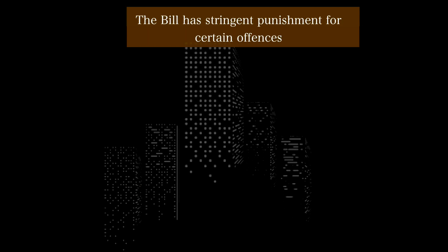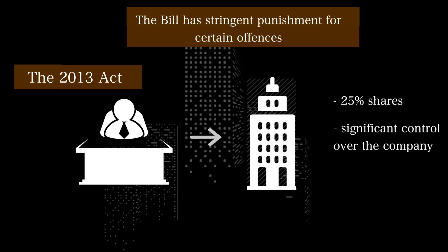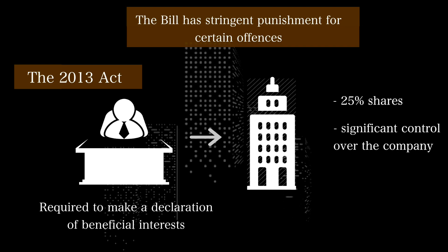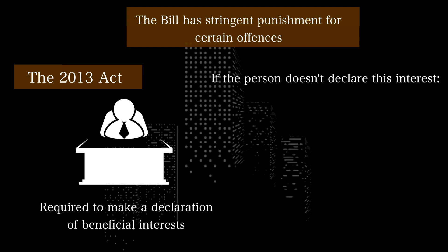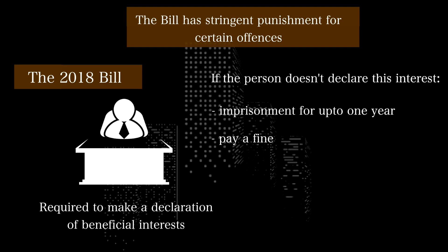The Bill also makes the punishment for certain offences more stringent. For instance, under the Act, if a person holds a beneficial interest of at least 25% shares in a company or has significant influence or control over the company, he is required to make a declaration of his beneficial interest. If a person does not declare this interest, he can be punished with a fine between 1 lakh rupees and 10 lakh rupees along with a continuing fine. The Bill now introduces imprisonment for the offence, providing that a person may be fined or imprisoned for up to one year, or both.